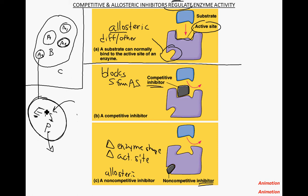Moving on: we talked about how this is the enzyme, here's the substrate, with the active site labeled. We had an allosteric site, and competitive inhibitors slow down the rates of reaction by blocking the substrate from binding to the active site, leading to fewer products per unit time. We also have non-competitive inhibitors that bind to allosteric sites and slow down rates of reaction by changing the conformation of the active site so the substrate can no longer achieve induced fit.